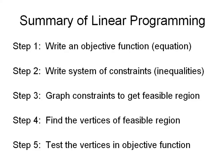In summary, to solve a linear programming problem, there are five major steps. You need to write the objective function, which will be an equation. You need to write the system of constraints, which will always be inequalities. You need to graph the constraints to find the feasible region.